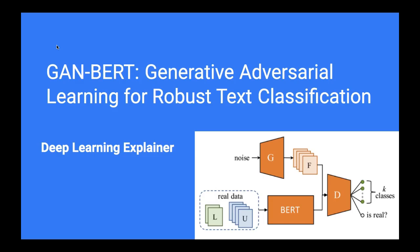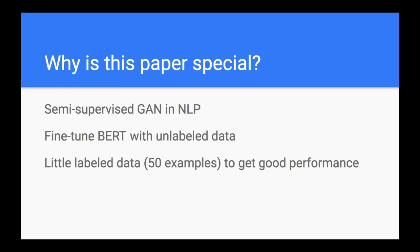Welcome to the channel where I talk about deep learning papers and NLP papers. Today our topic is GAME-BERT: Generative Adversarial Learning for Robust Text Classification. It's a way to use semi-supervised BERT in the NLP domain to gain a very high level of data efficiency.